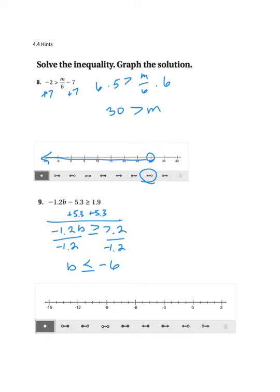So I'm going to have a closed circle on negative 6. It's less than or equal to. And it's less than, so I'm going to be moving to the left. So I'm going to use this button right here.